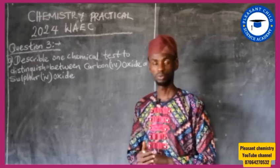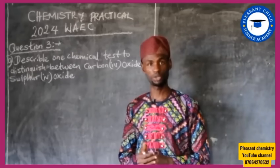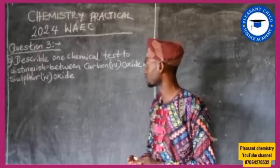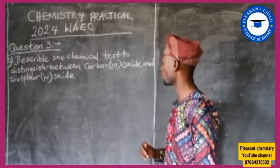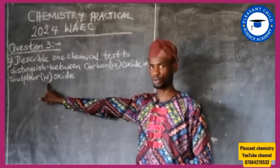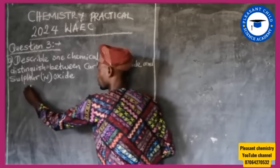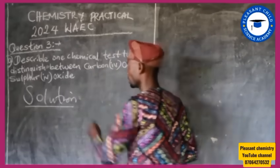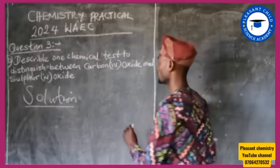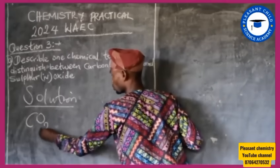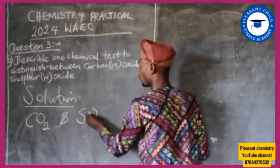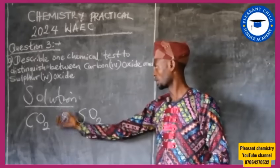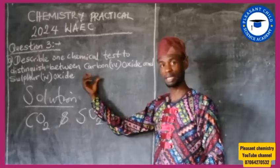Describe one chemical test to distinguish between carbon dioxide (CO2) and sulfur dioxide (SO2). If you want to distinguish between the two using a chemical test, remember: